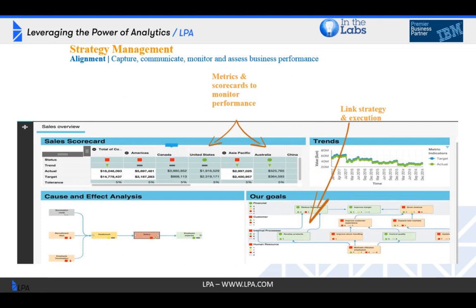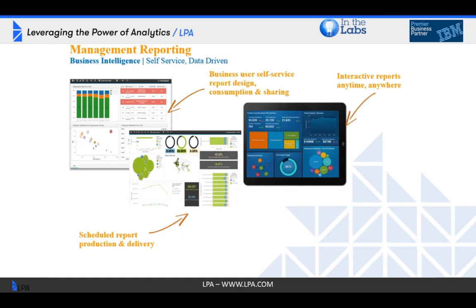Within the toolset you can also do strategy management, including metrics and scorecards that the system creates and updates automatically as data updates. You can see visually at any point how you're doing against your targets using both visual cues and numbers. You can create goals within the system, and it will track those goals against those metrics, as well as perform cause and effect analysis — showing why certain components are up or down from target, with the ability to drill down and see which components are above or below target.